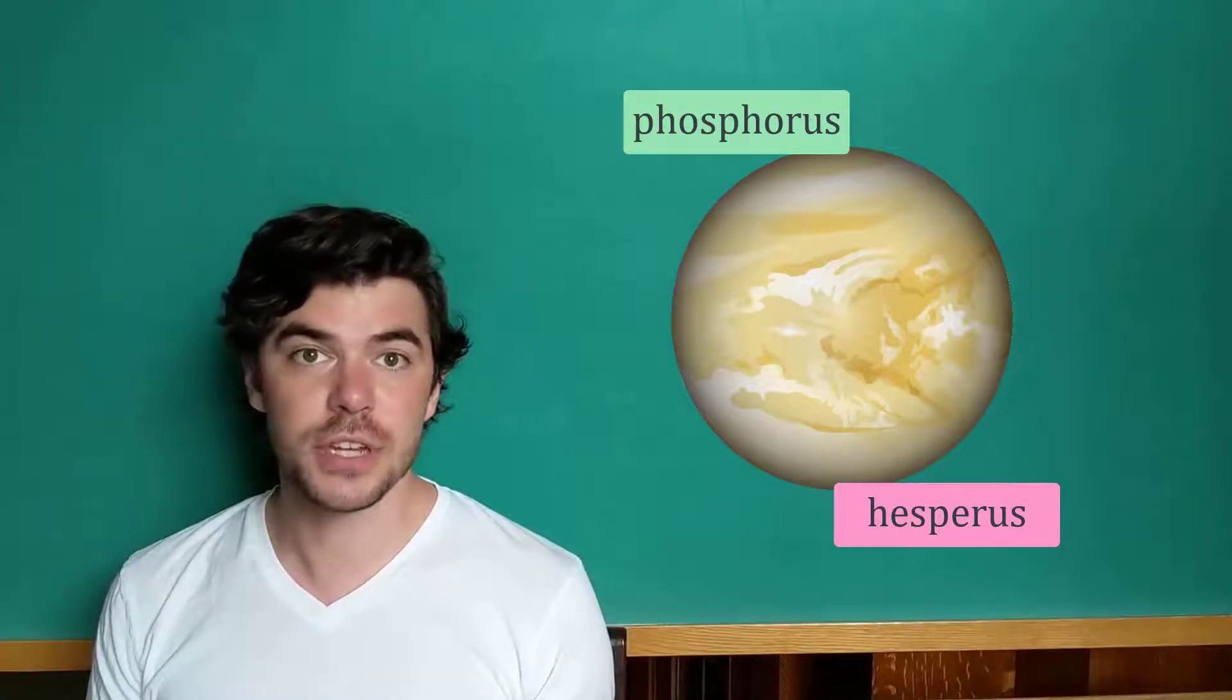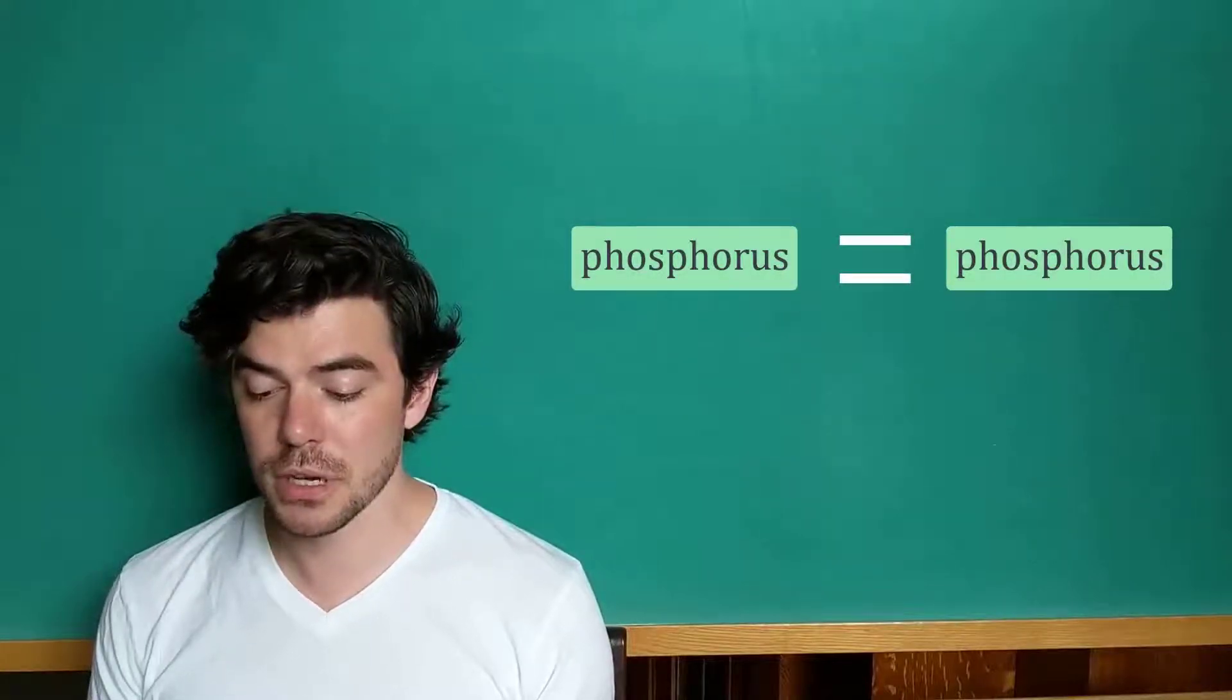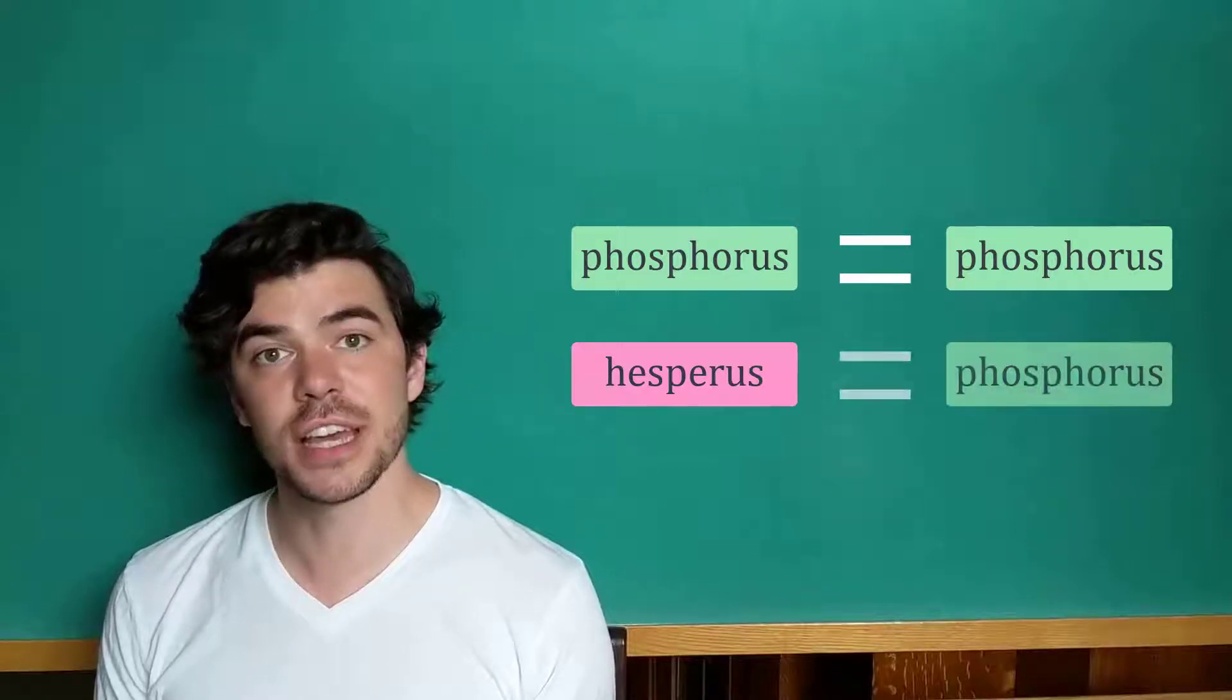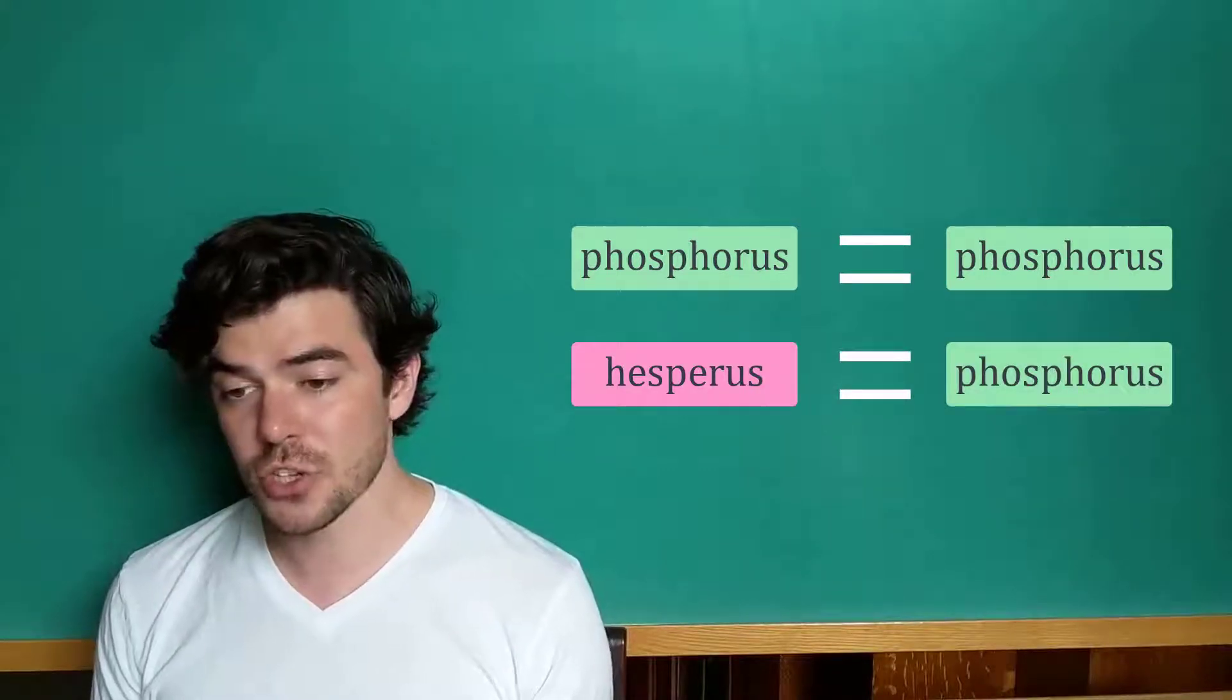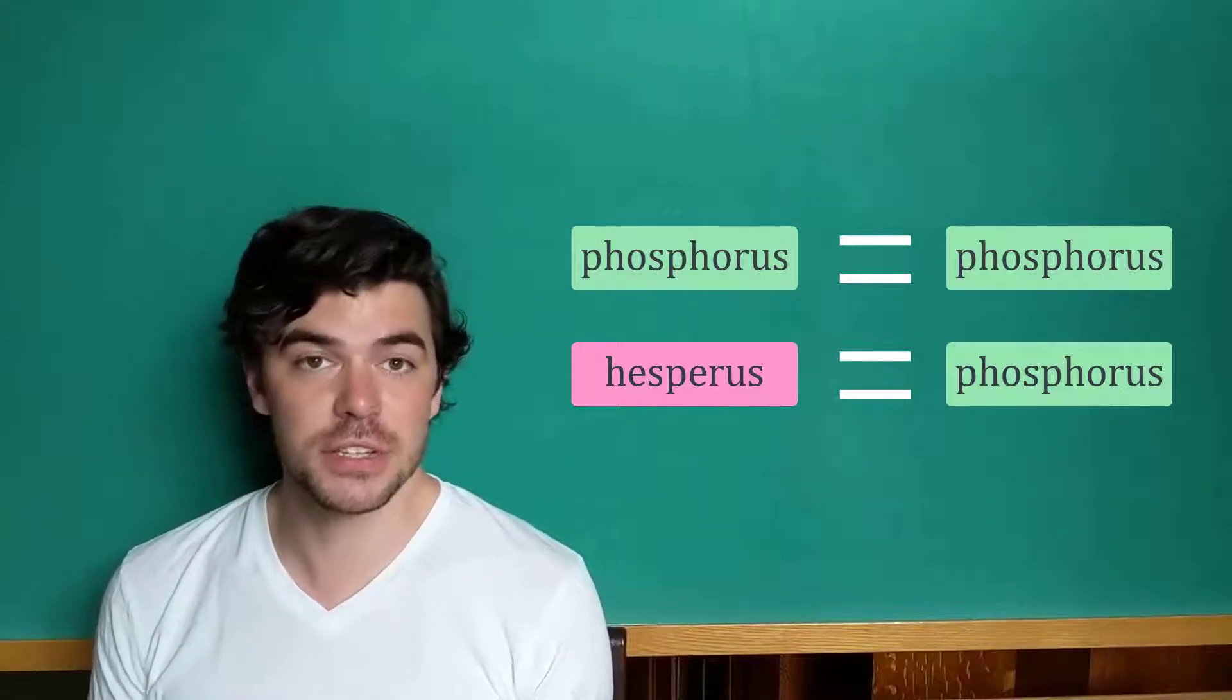We can make two statements about phosphorus and hesperus. We could say phosphorus is phosphorus. Nobody would bat an eye at that. But the claim that hesperus is phosphorus, that is to say that the two names refer to the same thing, is not only genuinely informative, it's the kind of thing that constitutes a legitimate discovery.